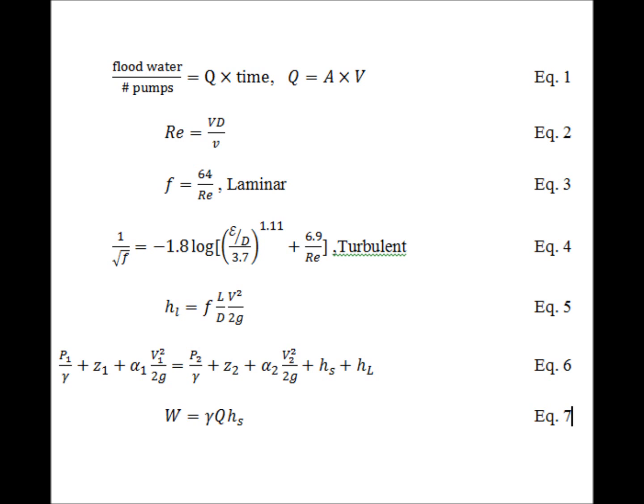That would give us a Reynolds number, which would correspond to either laminar or turbulent. If it's laminar, we would use equation three. If it's turbulent, we would use equation four. In both cases, we'll be solving for the friction factor f. Once we solve either equation three or equation four, we can move to equation five and solve for the head loss hL.